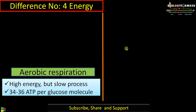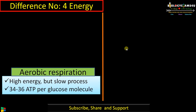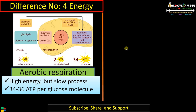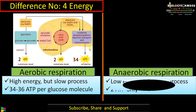Difference number four regarding energy: in aerobic respiration, high energy is formed, but it is a slow process. Approximately 34 to 36 ATP molecules are formed per glucose molecule oxidized — two ATPs formed in glycolysis, approximately two ATP in the citric acid cycle, then the majority of ATP formed during the electron transport chain, totaling approximately 34 to 36 ATP.